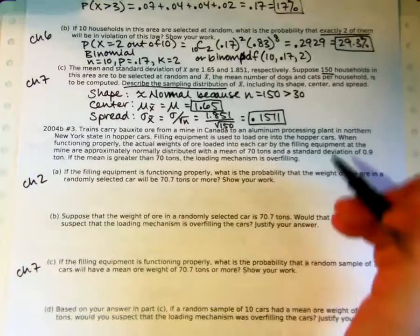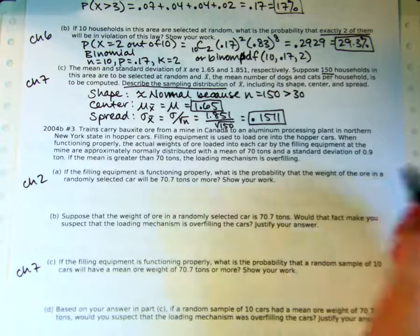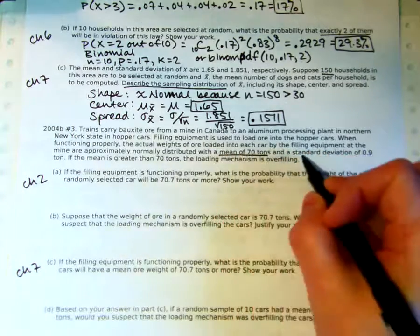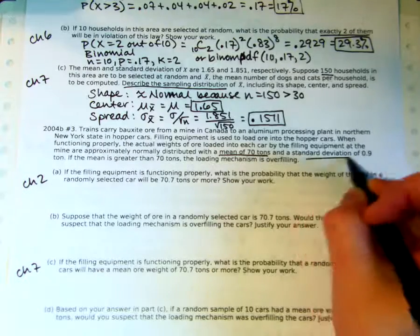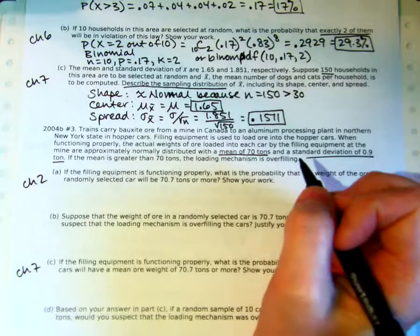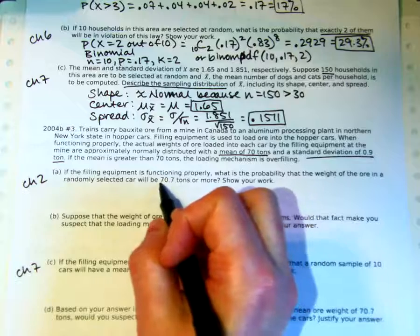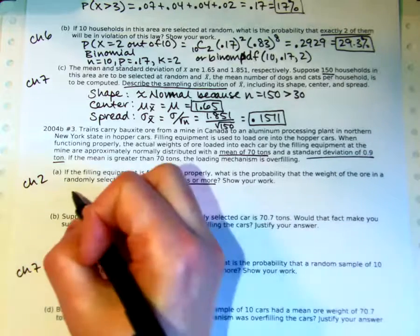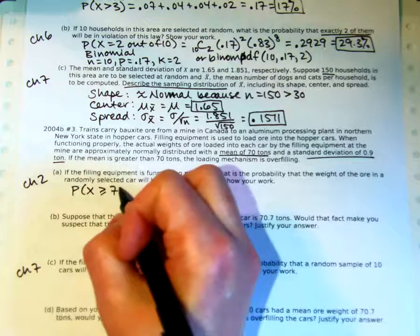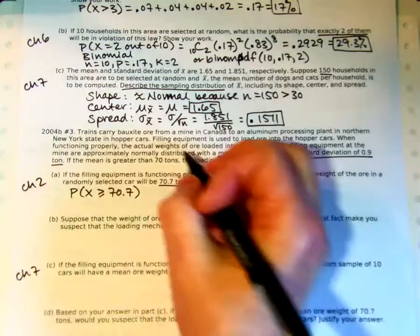So part A, we've got a machine that is filling carts full of ore or bauxite. I don't even know what bauxite is, but that's okay. The most important part is we know the mean is 70 tons, the standard deviation is 0.9 tons. We want to know what's the probability of getting a randomly selected single car that has 70.7 tons or more. So the probability that X is greater than or equal to 70.7.